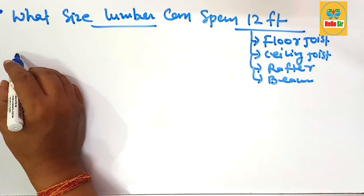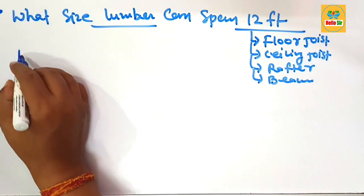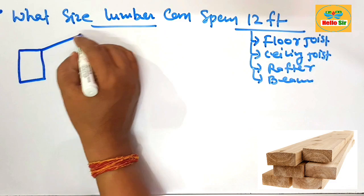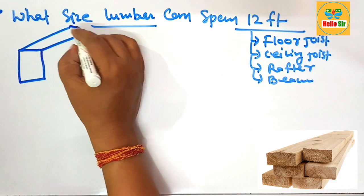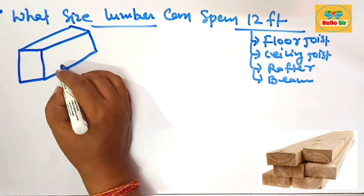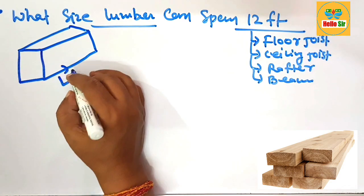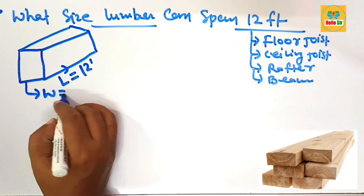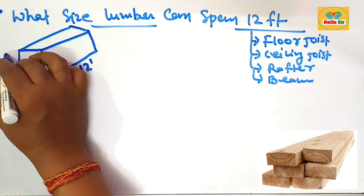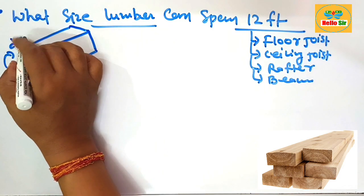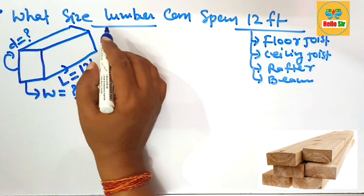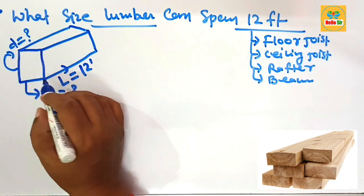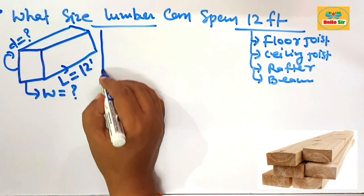Understand the dimensions of lumber: the depth, width, and length of a span. This rough diagram shows the length of lumber at a 12-foot span, the width of the lumber, and the depth of the lumber. You need to determine the depth and width section of the lumber.